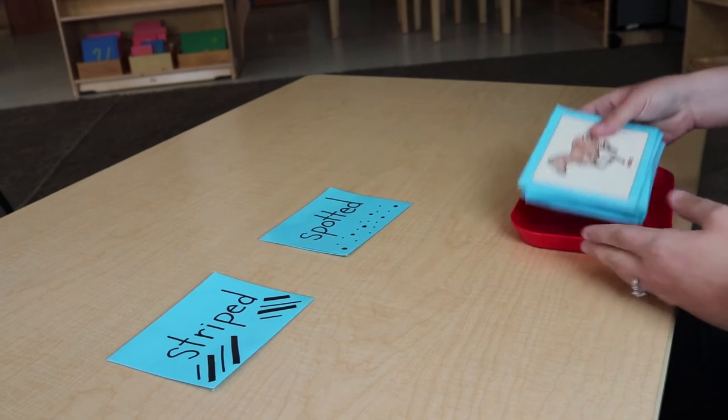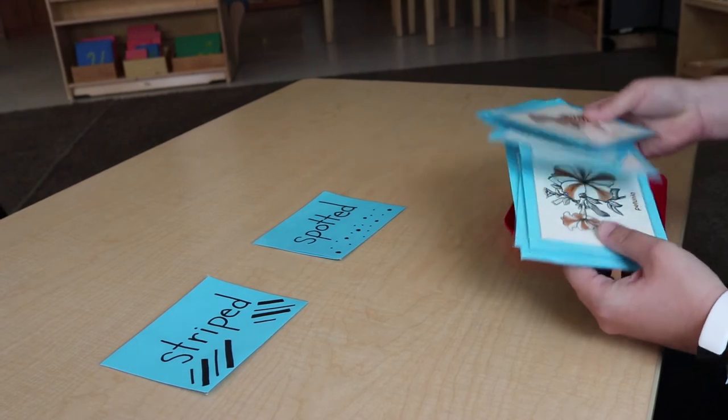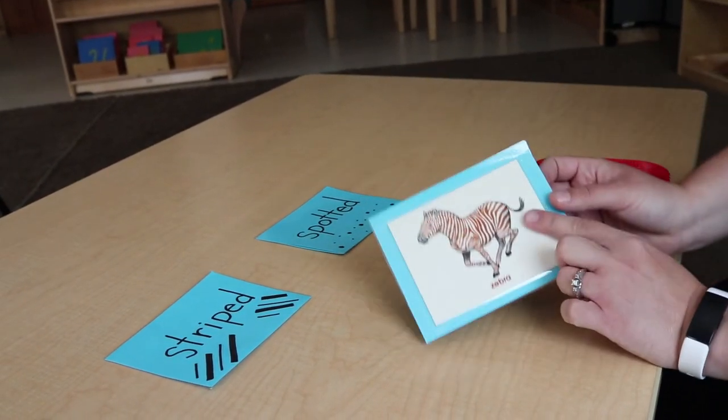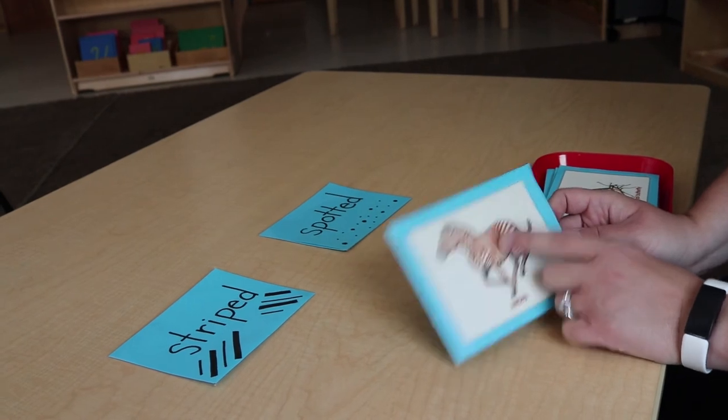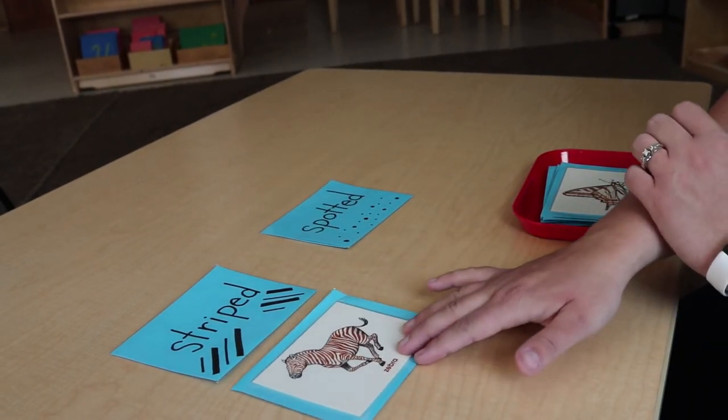And then you just have a bunch of different pictures of animals or fruit that you can have the kids sort. So, we have a zebra and you can talk to them about how the zebra has stripes, so it would go with the stripes.